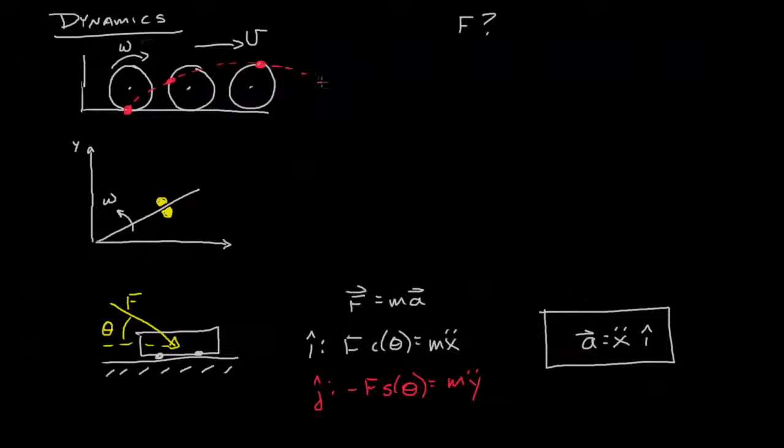So let's take a look at our cycloid example. In red, remember that the acceleration was simply negative v squared over r in the j direction. In this example we're going to go ahead and neglect gravity. So if we wanted to know the force required to keep that stone rolling on that tire, it would simply be F equals ma, and we'd see that the force equals negative mv² over r in the j direction.